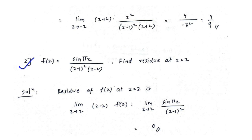The second problem is also based on a simple pole. f of z equals sin(pi z) upon (z minus 1) squared into (z minus 2). Find the residue at pole z equals 2. To check whether this pole is simple or repeated, put the denominator equal to 0. At z equals 2, the pole is simple — it is not repeated.